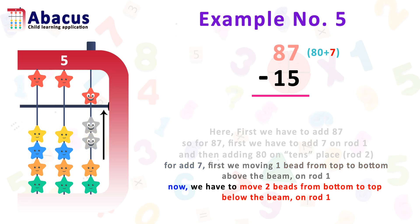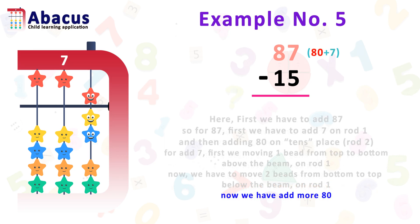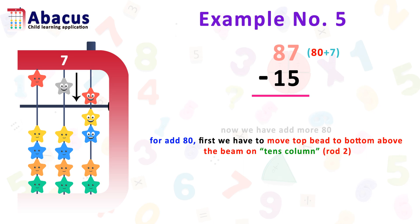We move 2 beads from the bottom to the top below the beam on rod 1, and we got 7. Now we need to add 80 to get 87. For 80, first we move the top bead to the bottom above the beam on the 10th column, which is rod 2.